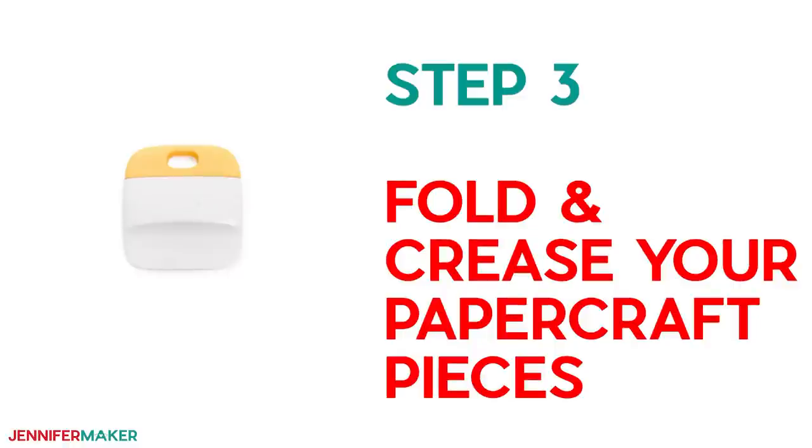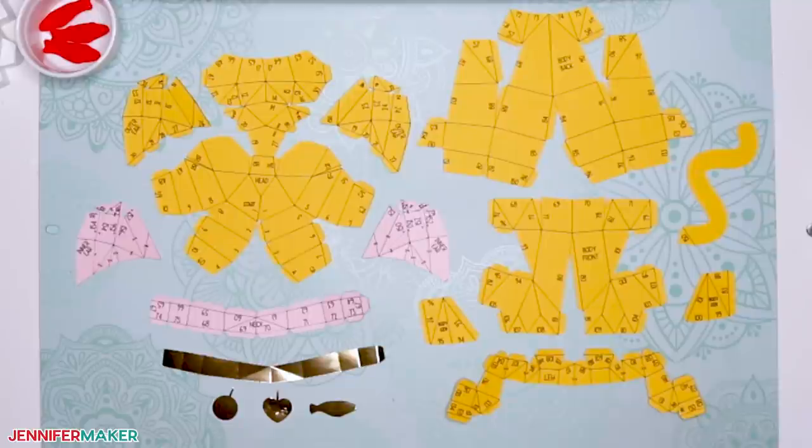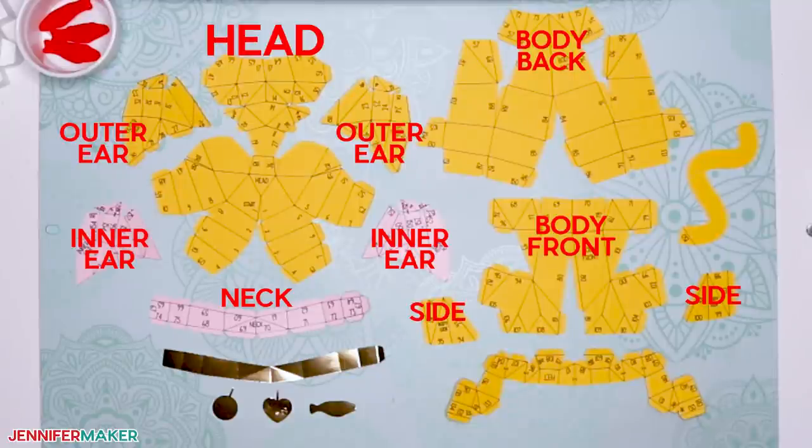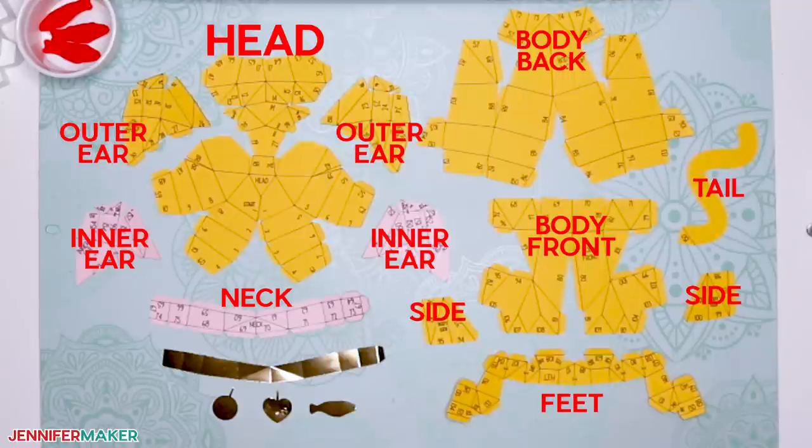Step three, fold and crease your paper craft pieces. These are the pieces you will have when you're finished cutting your cat pieces. There's a head, two outer ears, two inner ears, the neck, a front body, back body, two side bodies, some feet and a tail. And then we have the optional collar and tag that you can choose to cut if you want.